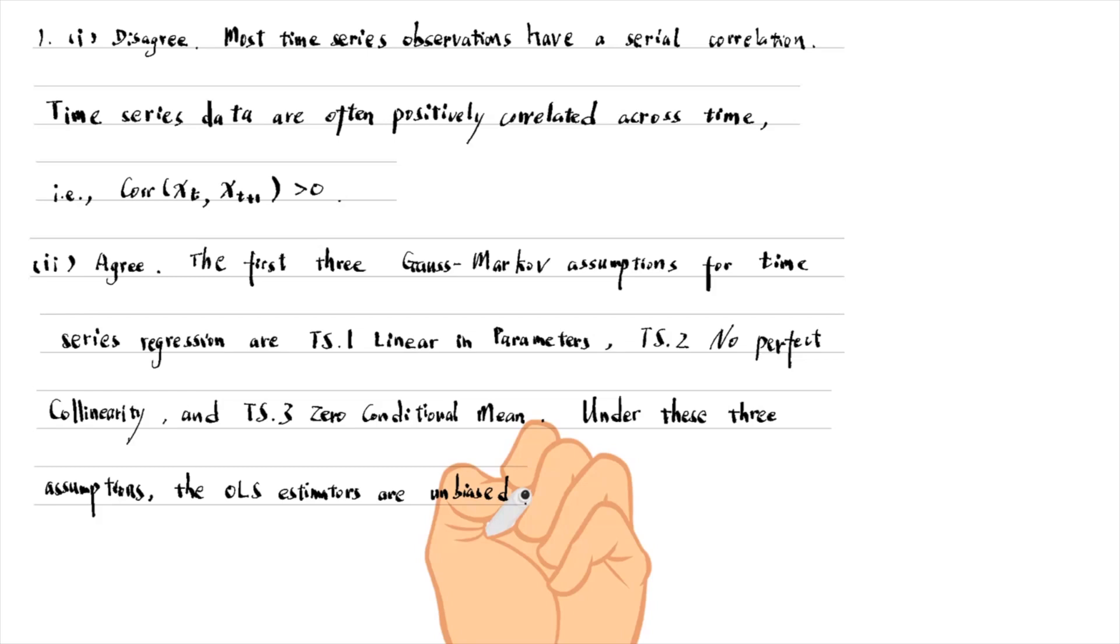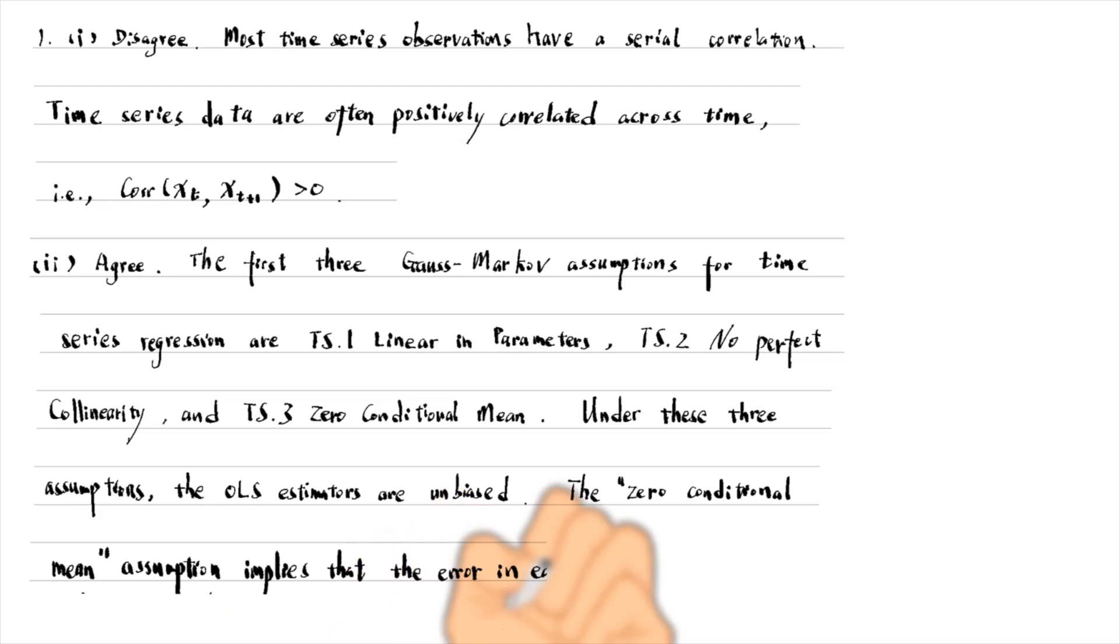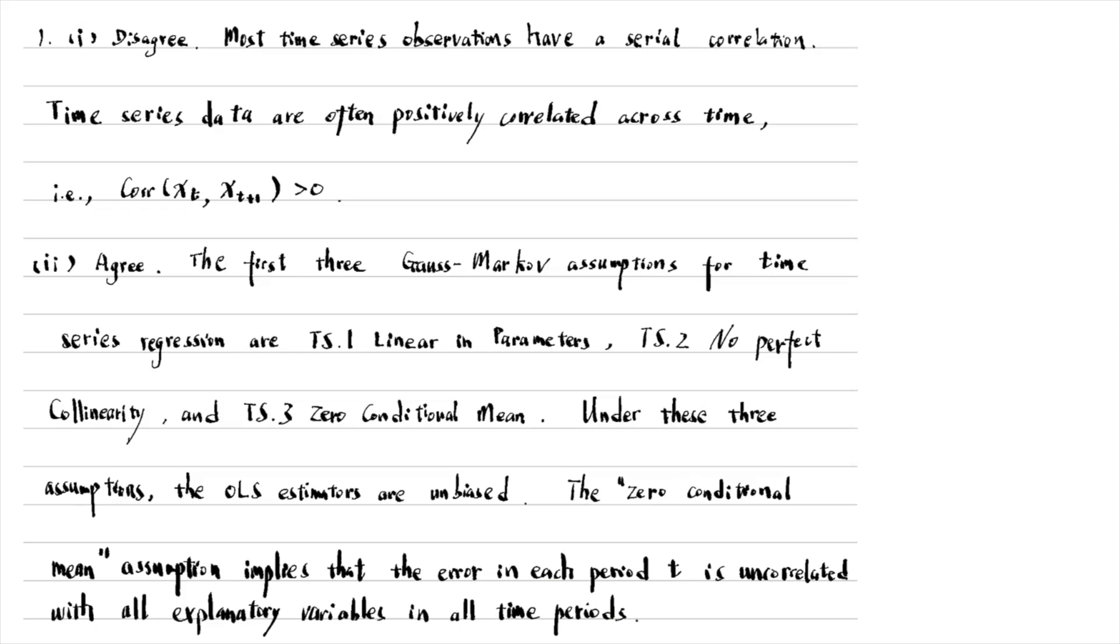Remember, the zero conditional mean assumption for time series implies that the error term in each time period t is uncorrelated with all explanatory variables in all time periods.